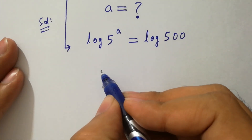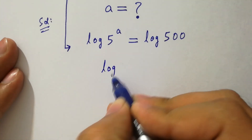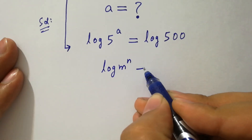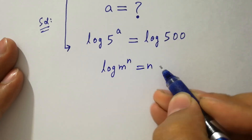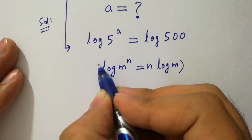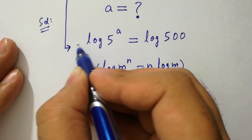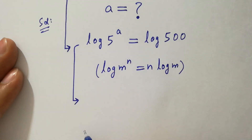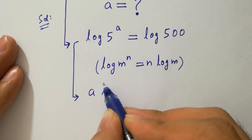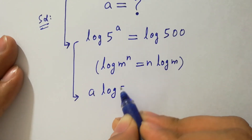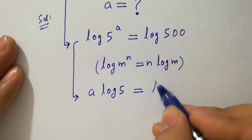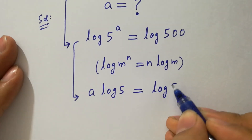As log m to the power n equals n log m, that will be a log 5 equal to log 500.